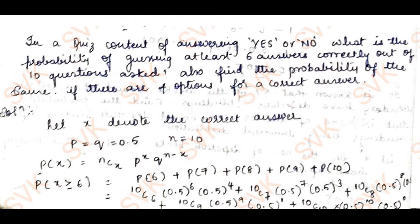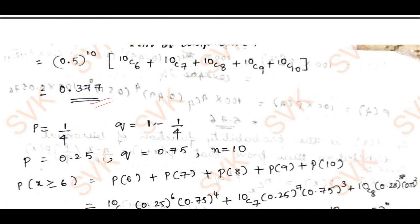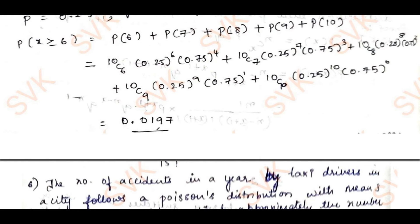Moving to the next problem — the quiz problem. Here p and q are both 0.5 and n = 10. I use the binomial distribution: P(X) = nCx · p^x · q^(n−x). Finding P(X ≥ 6): since n = 10, I add probabilities from 6 to 10, getting 0.377. Further with p = 1/4 and q = 3/4, I get P(X ≥ 6) as 0.0197.